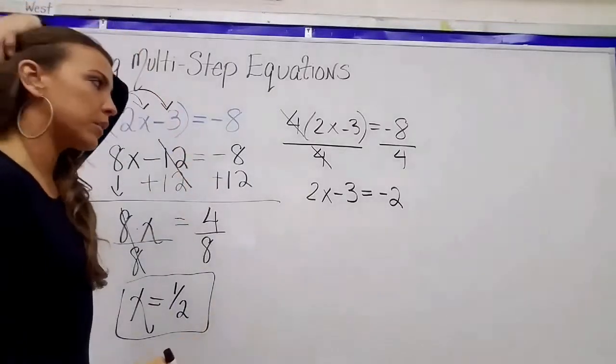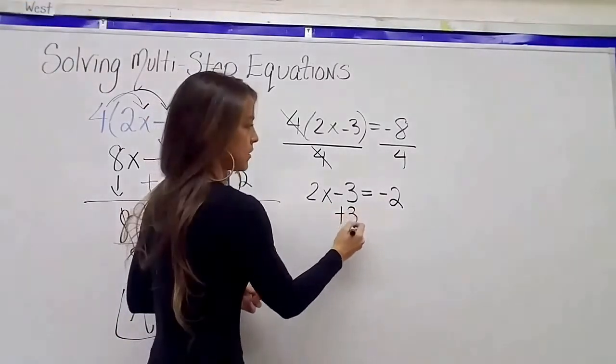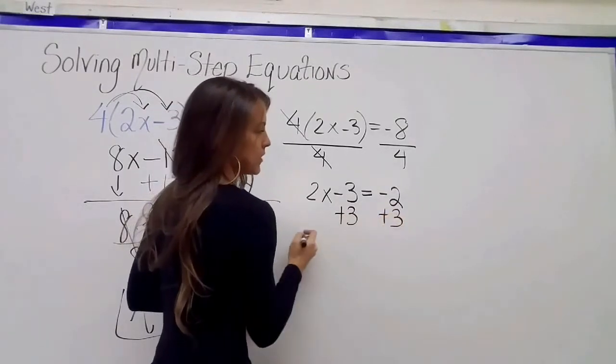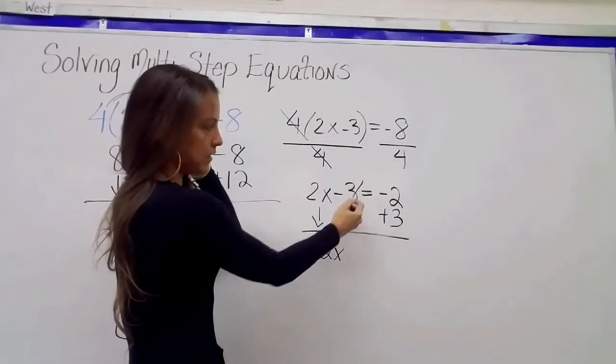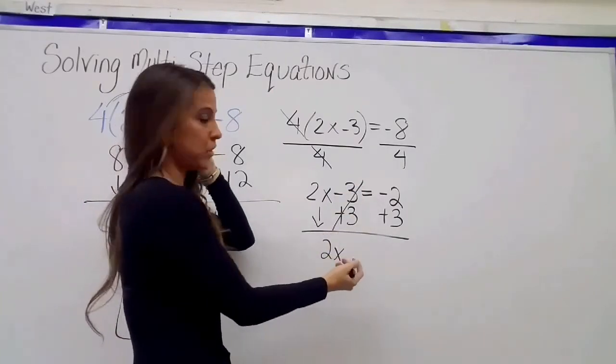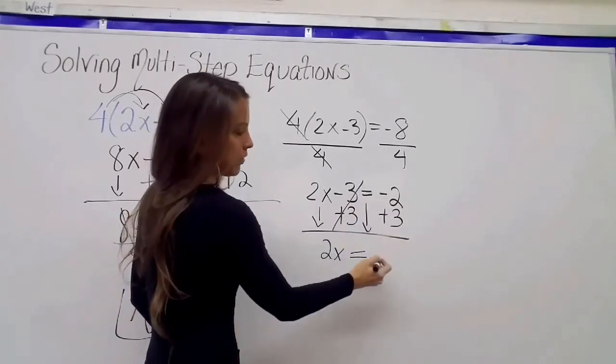And now I continue like I did over here with the 2-step. I want to get rid of the minus 3, so I do the inverse, plus 3 on the left, plus 3 on the right. I bring down my 2x, negative 3 plus 3 is 0, and 0 plus 2x is just 2x. Bring down my equal sign, negative 2 plus 3 is 1.